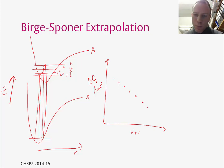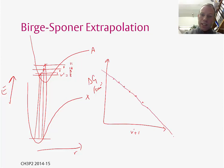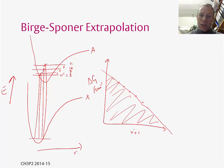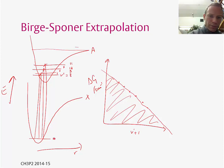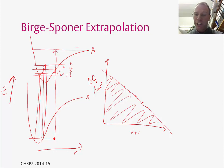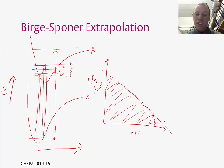From our spectrum we can obtain these points, and then we can draw a straight line through them and extrapolate it. The area under this straight line is actually the dissociation energy — the energy to go from the lowest level in the ground electronic state up to dissociation in the excited electronic state. This extrapolation is a slight overestimate because in reality the line curves a little at the bottom, but it gives us a useful estimation of the dissociation energy. This is another piece of useful information we can extract from electronic spectroscopy.